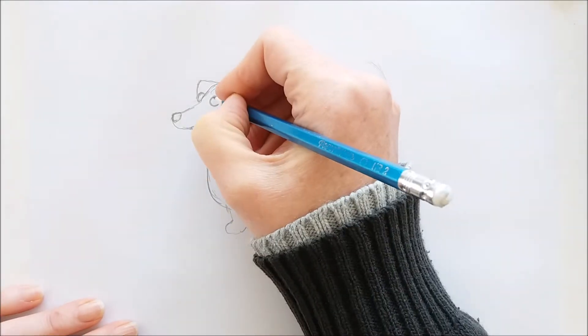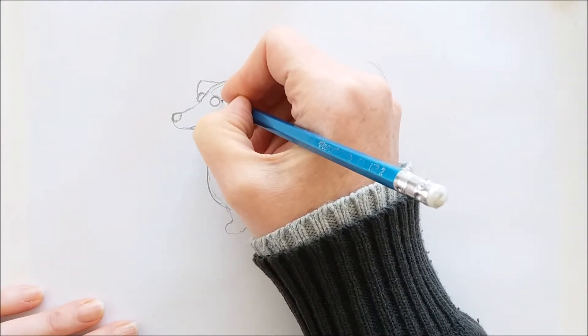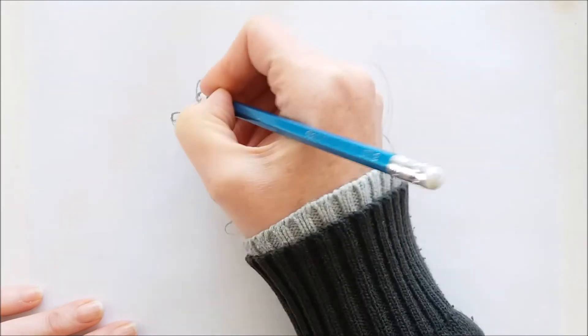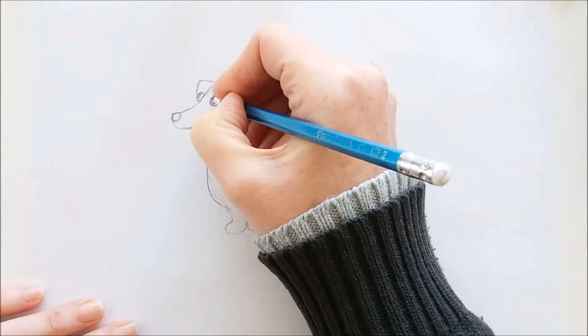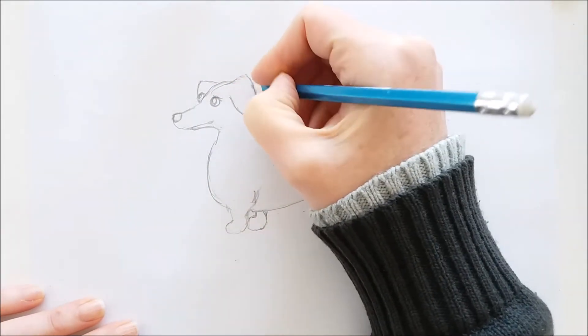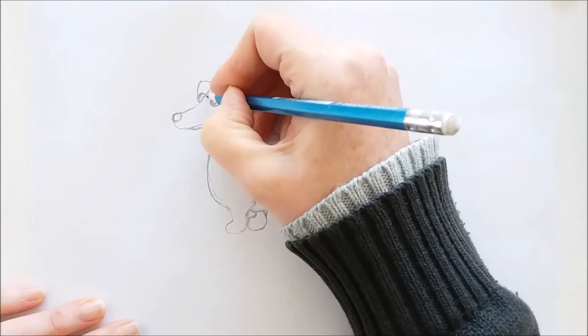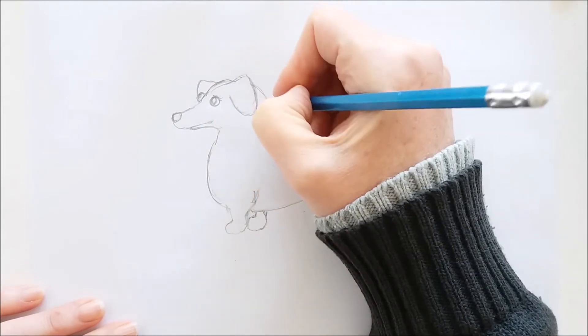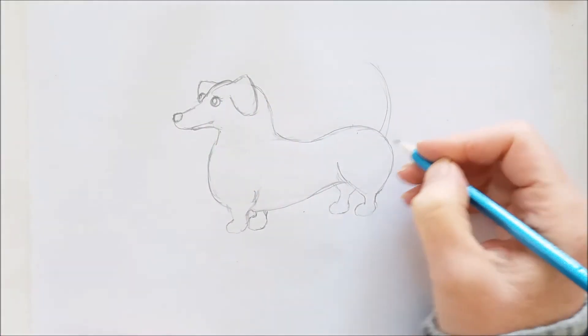So you can see that our wiener dog is just about finished. I think one of the things I'd like to do is give this dog a collar before I outline and color him. And it's fairly easy to draw a collar on our little guy.